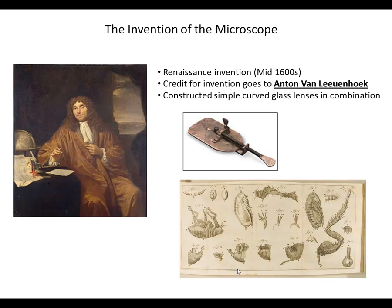Other renaissance inventions include the printing press, gunpowder, and the mariner's compass. But the microscope is most important for us in science — it's obviously the basis for investigating the cell, which is the basic unit of life. Credit for inventing the microscope goes to a Dutch merchant named Anton van Leeuwenhoek, who is often referred to as the father of the microscope because he was really the first to popularize and mass produce microscopes.